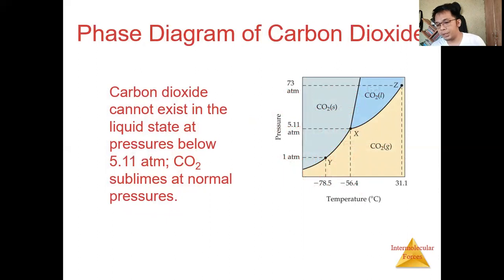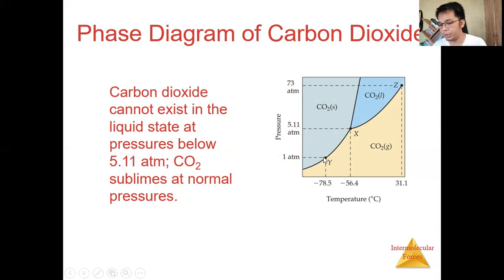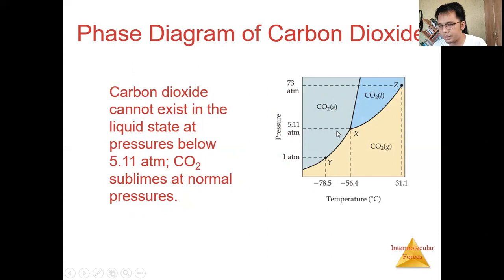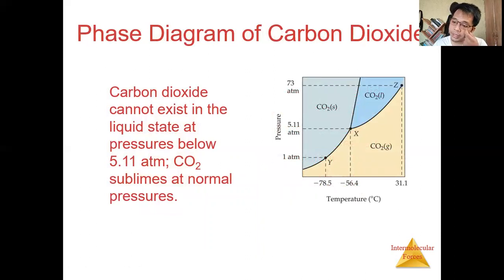This is the phase diagram for carbon dioxide — same interpretation applies. Point X is the triple point where solid, liquid, and gas exist simultaneously in equilibrium. Point Y is the sublimation and deposition equilibrium. At point C, at 73 atmospheric pressure and 31.4°C, that is the critical point where the liquid and gas phases are indistinguishable.